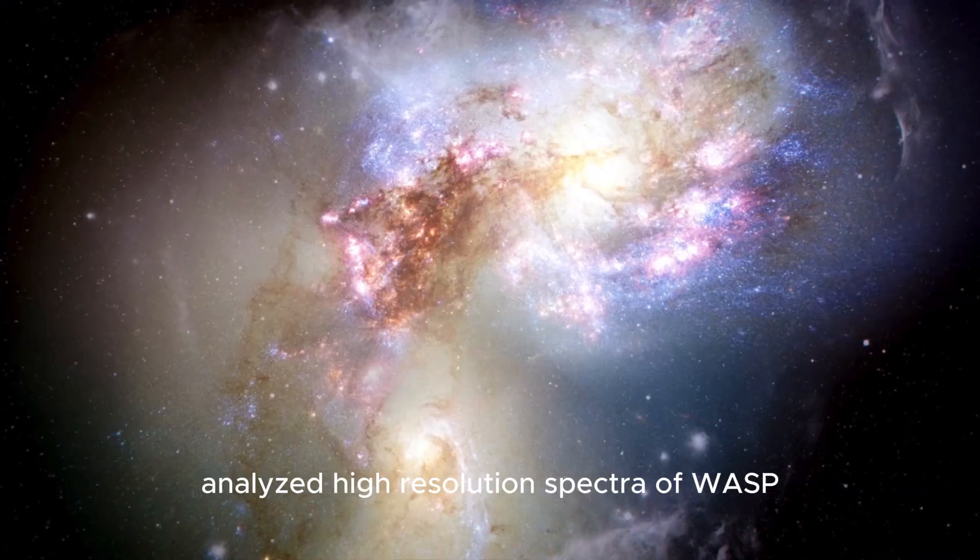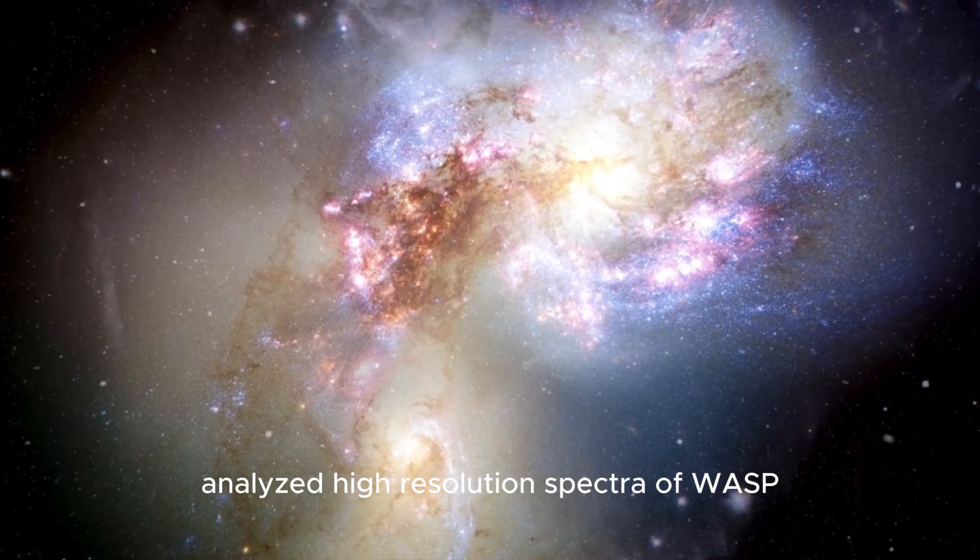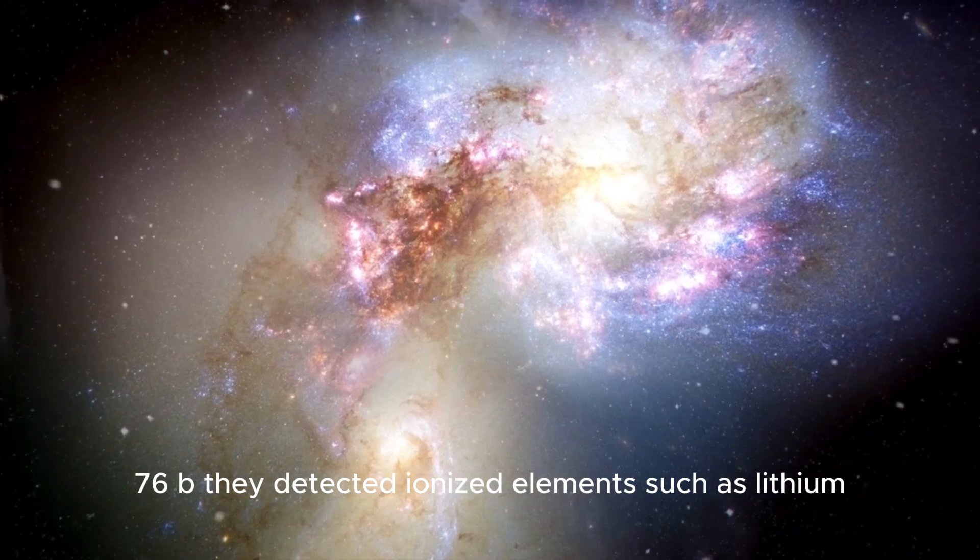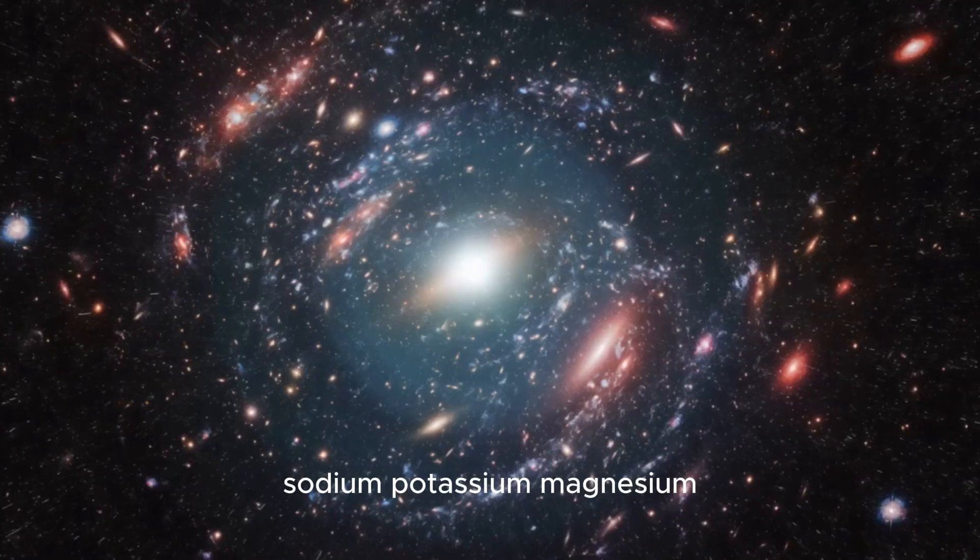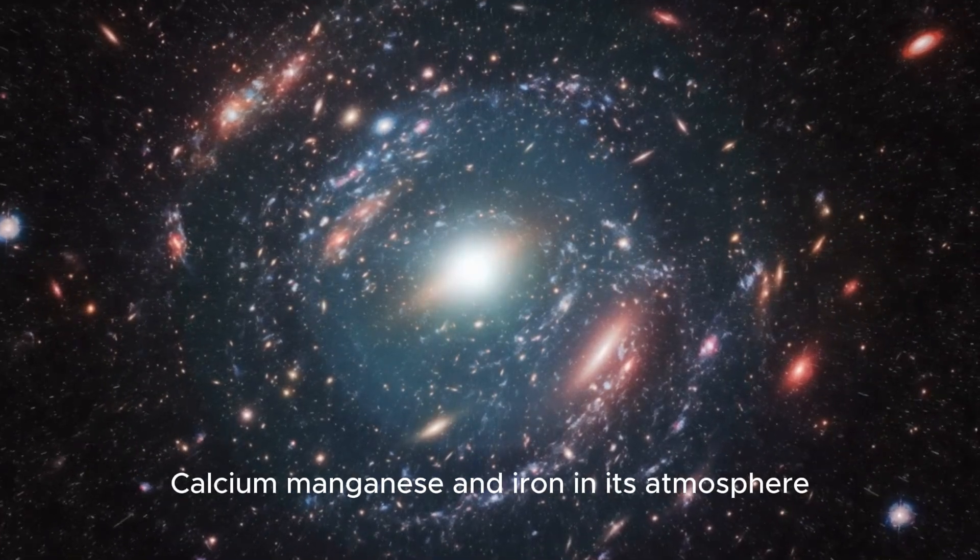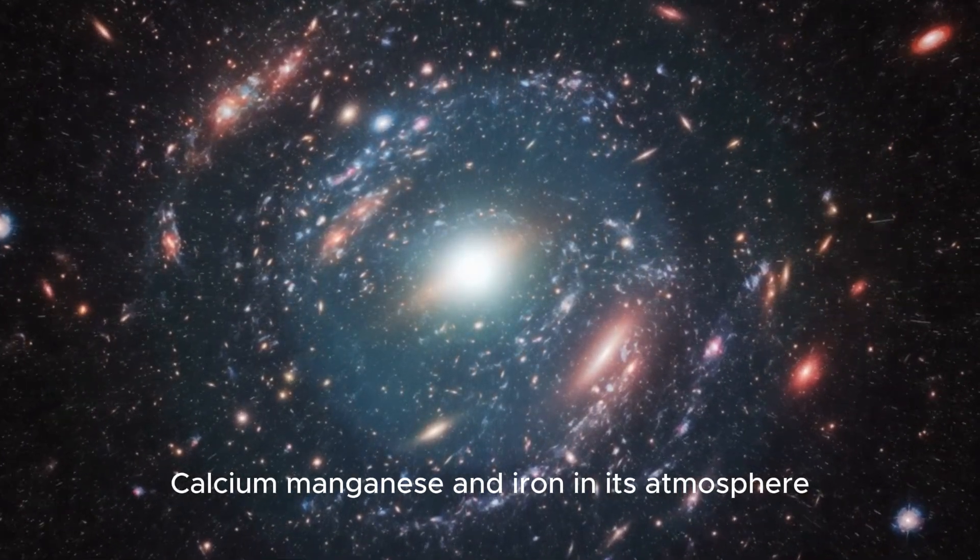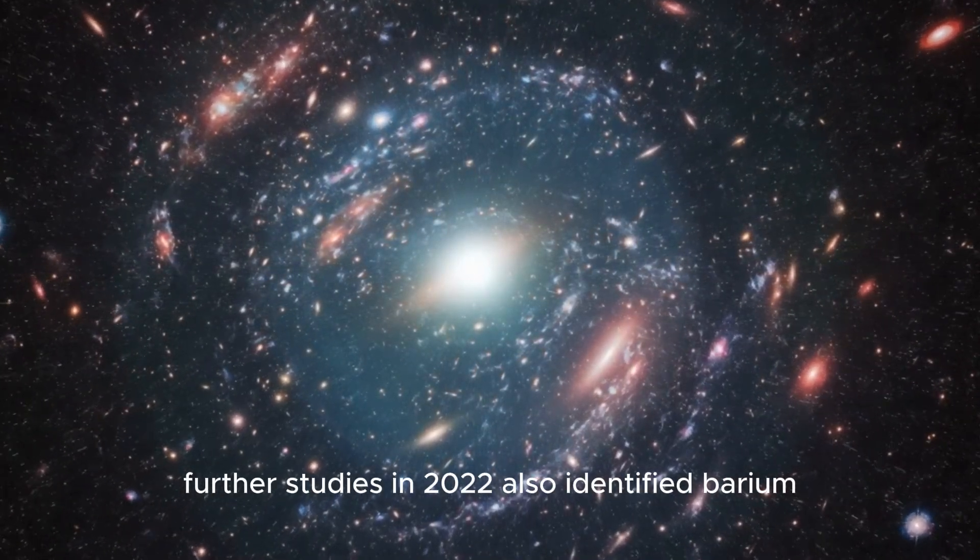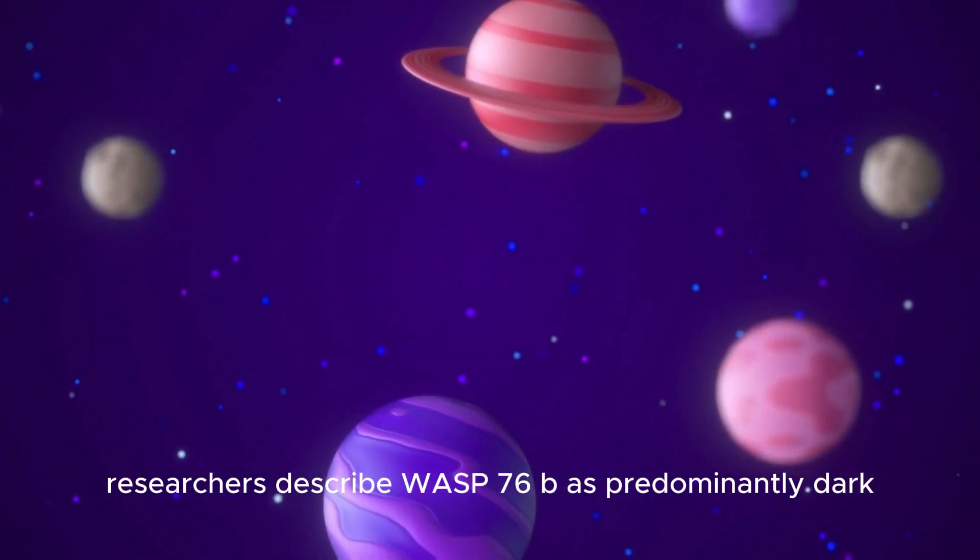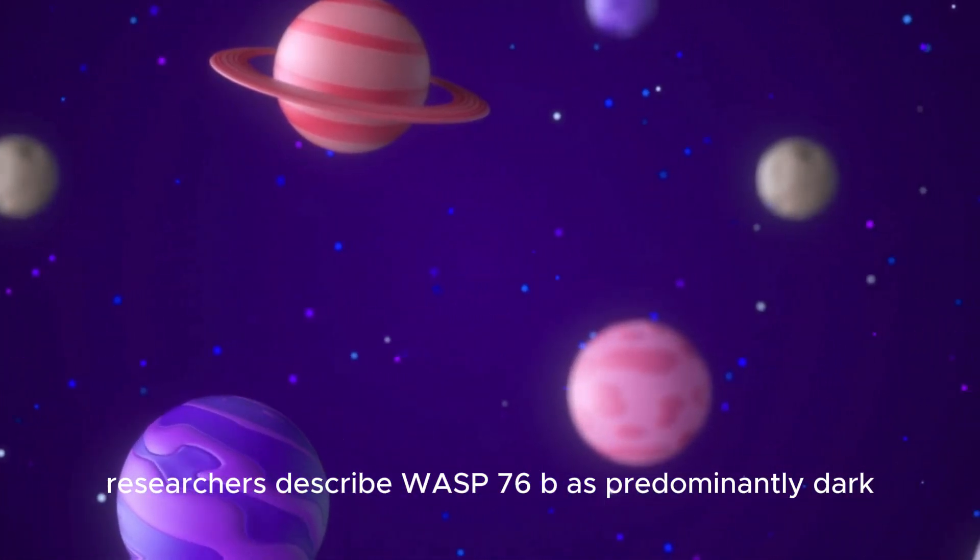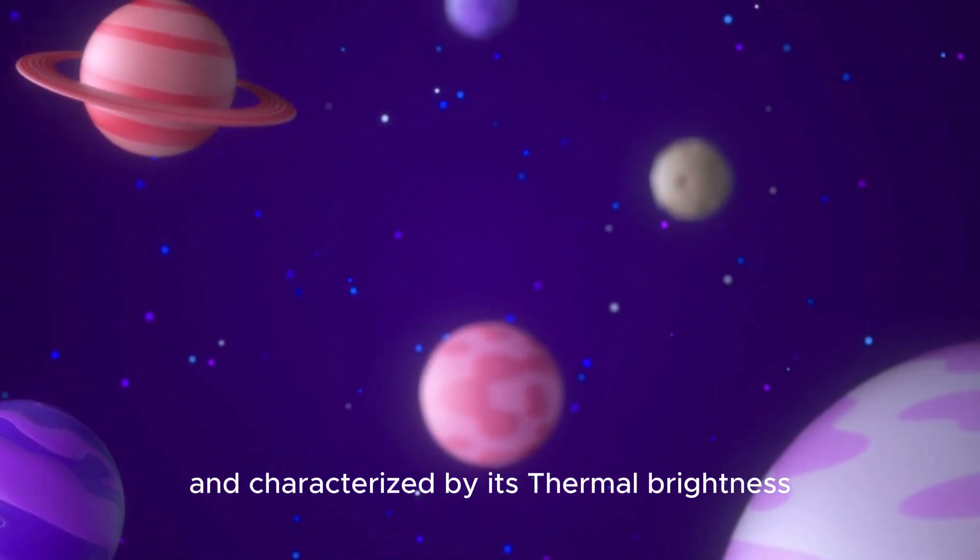When astronomers analyzed high-resolution spectra of WASP-76b, they detected ionized elements such as lithium, sodium, potassium, magnesium, calcium, manganese, and iron in its atmosphere. Further studies in 2022 also identified barium. Researchers describe WASP-76b as predominantly dark and characterized by its thermal brightness.